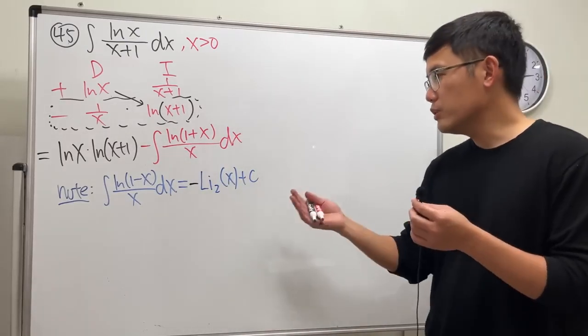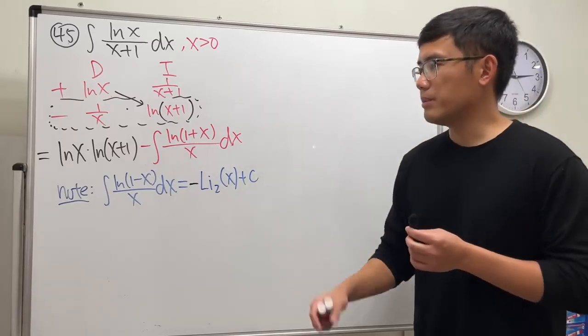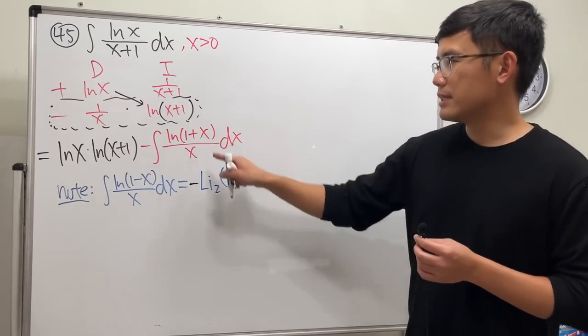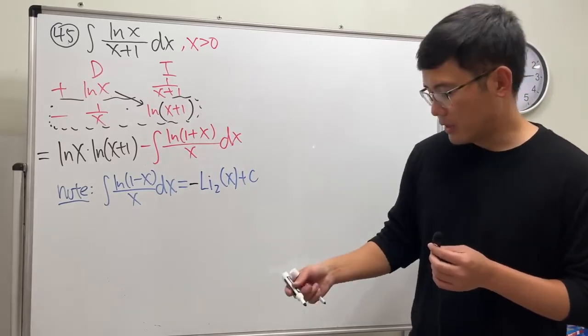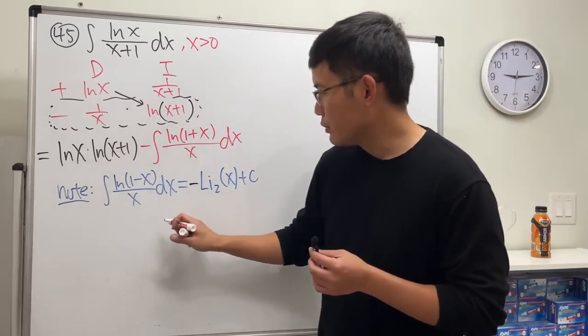They look very similar. So how do we make this so that we can actually make it work? Be really careful because we have the x here and x here, so be super careful with that. Right here, what we have to do is let u